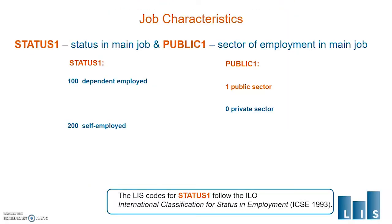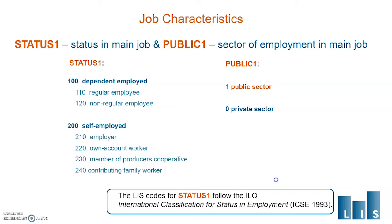Status and sector are two other interconnected variables. For status, we use the ILO International Classification for status in employment, which distinguishes mainly between dependent employed and self-employed. Among the employees, non-regular ones could be, for example, trainees or those marginally working. Among the self-employed, we distinguish between employers, own-account workers, unpaid contributing family workers, and members of producers cooperatives — a code which is rarely filled, mostly in developing countries.